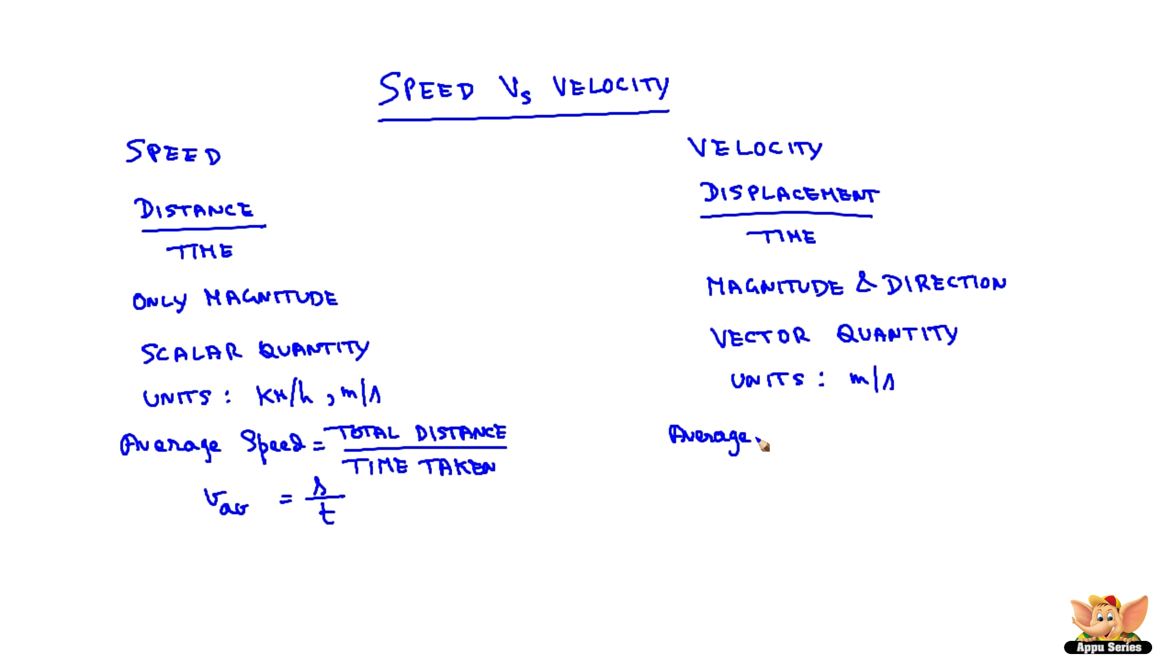The average velocity is defined as initial velocity plus final velocity by 2. V average equals u plus v by 2, an arithmetic mean of initial velocity and final velocity.